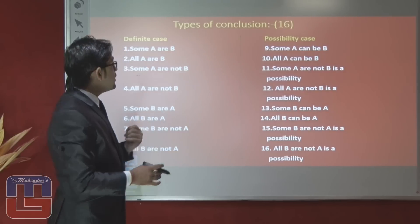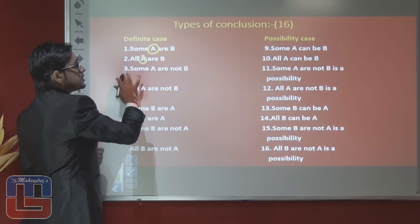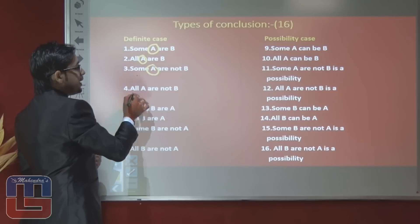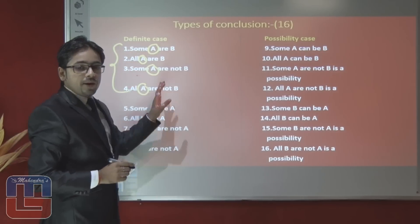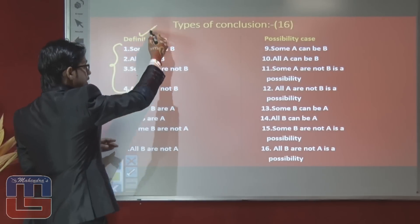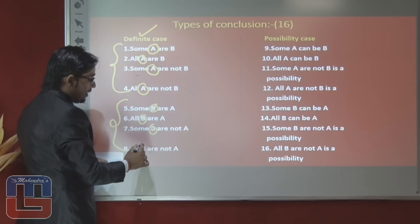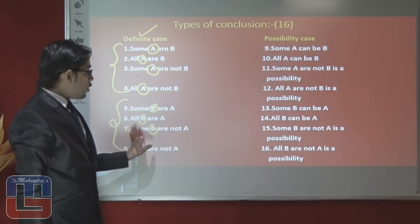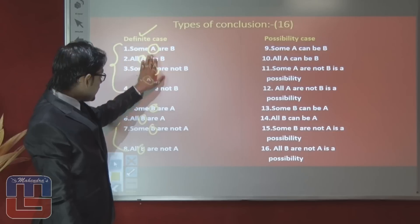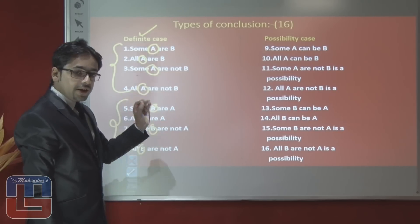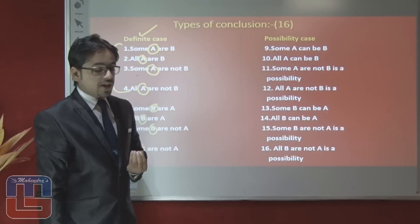These 16 general conclusions include, on behalf of A: some A are B, all A are B, some A are not B, and all A are not B — these four are definite conclusions on behalf of A. And four regarding B to A in definite manner: some B are A, all B are A, some B are not A, and all B are not A. These eight are the definite cases of any statement.